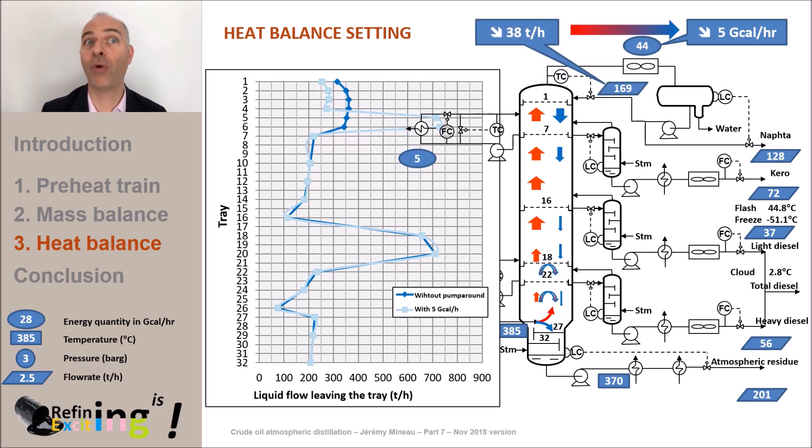But what are the properties affected when removing 5 gigacalories per hour with the top pump around? Well, we will reduce the separation efficiency between naphtha and kerosene so the flash point of kerosene will logically decrease. It drops by 1 degree C. But freezing point of kerosene is unchanged as well as the properties of diesel since these cuts are below the top pump around.